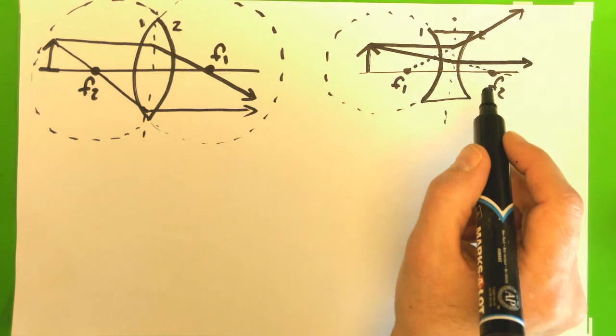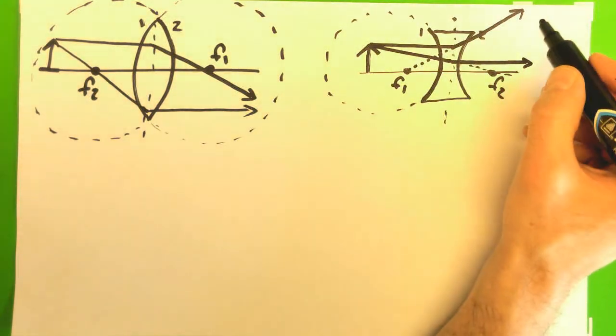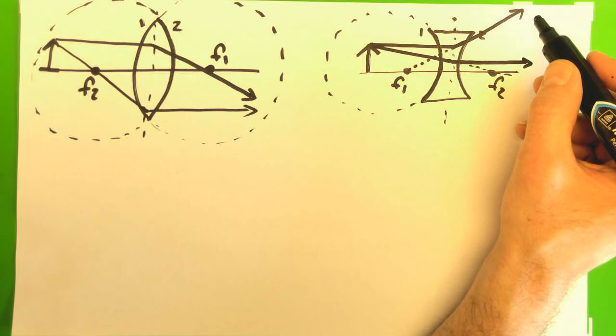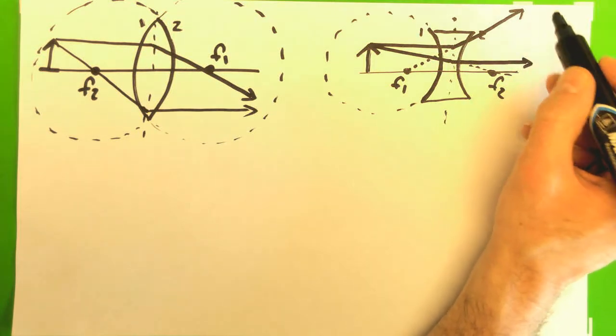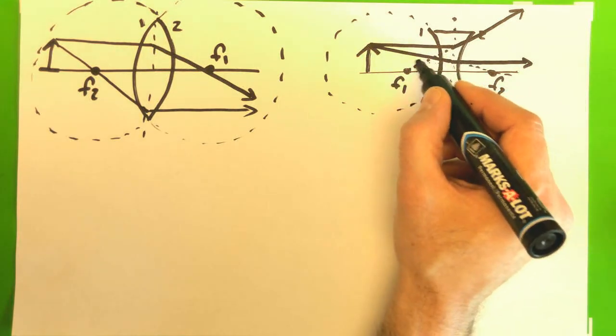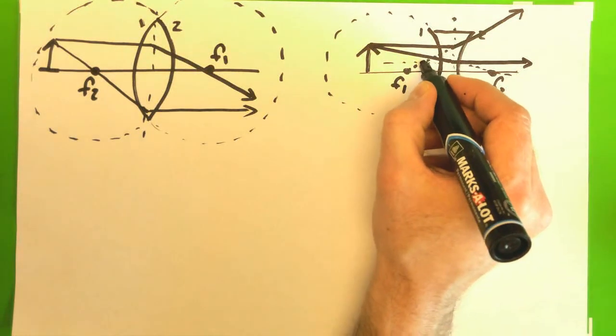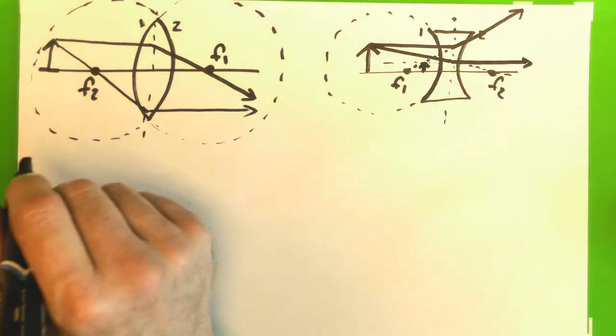And so looking at that means, well, those aren't diverging anymore. But just like our discussion with an object within the focal point of a converging lens, these rays are going to enter our eye and we're going to see them as if they're coming back from this direction and this one back from that direction. And this is where the image would form, where those two lines of sight converge.